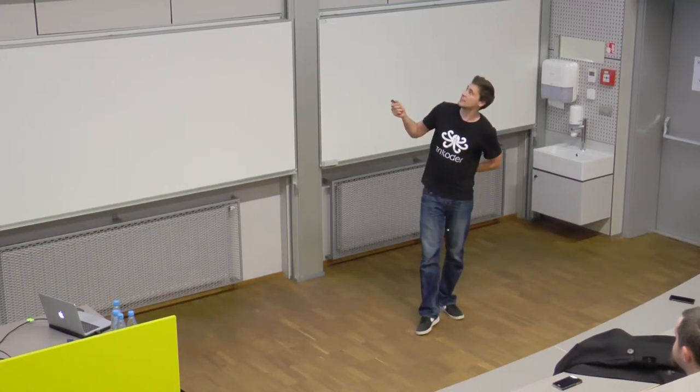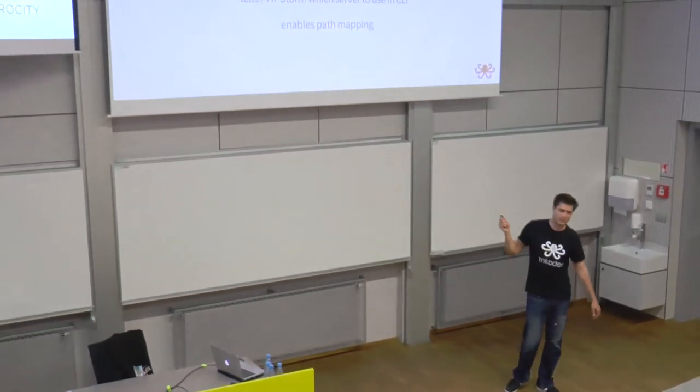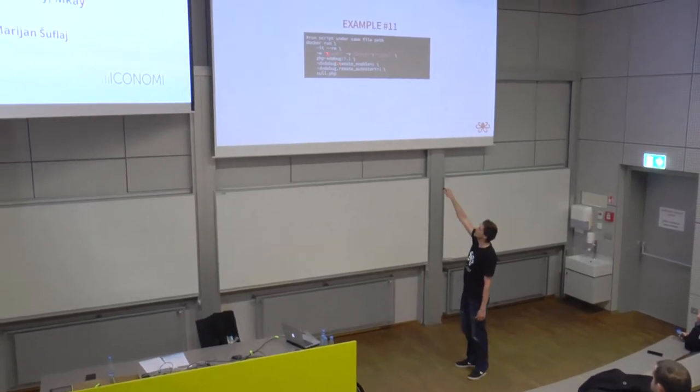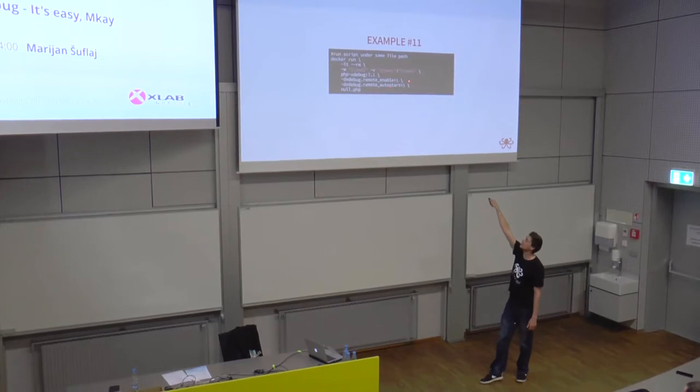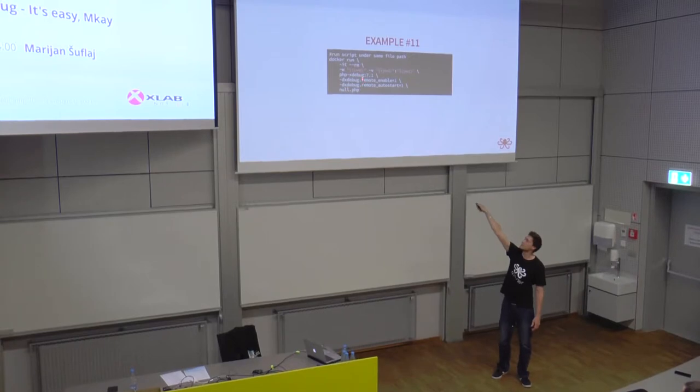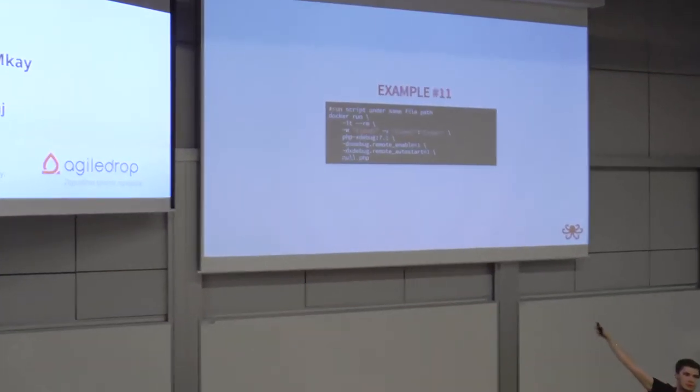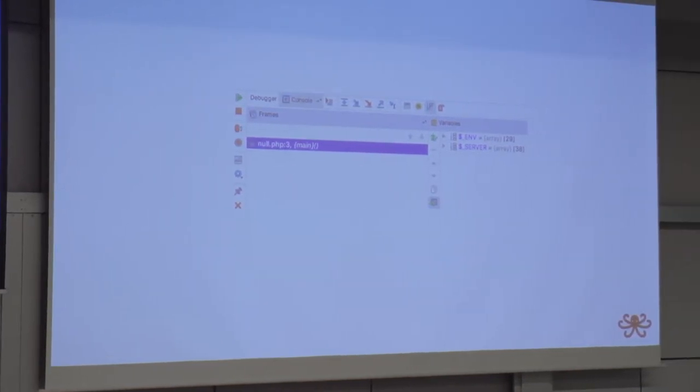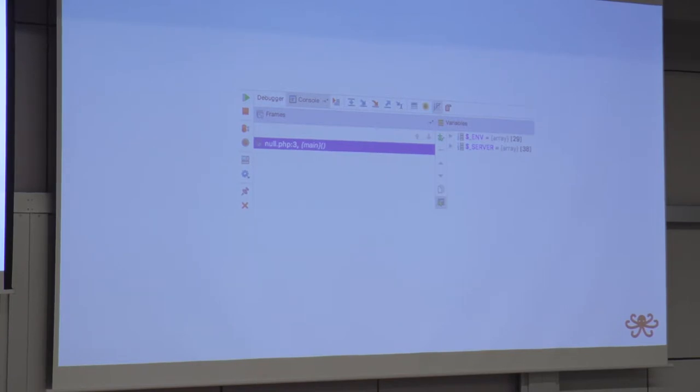In command line, things go a little different. When you are in command line, there is no server. You can run command line with only a PHP interpreter. So you will need to do something that will enable the path mapping. We'll do that through examples. Example one, we will run the script under the same file path. We are mapping our working directory onto the server. Without any server name or extra configuration, all you need is remote_enable and remote_autostart.